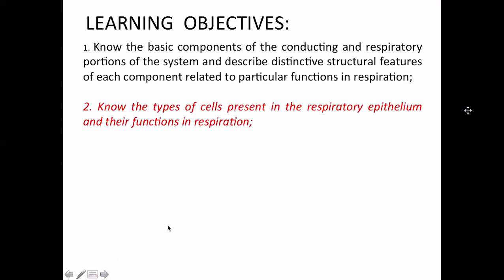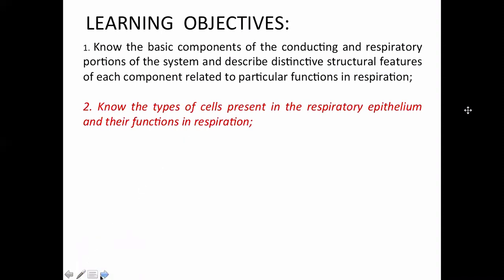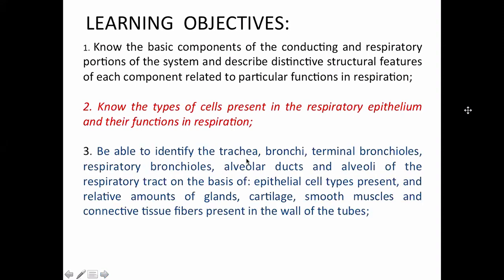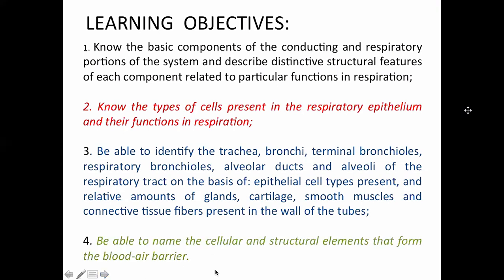Learning objective number two: know the types of cells present in the respiratory epithelium and their functions in respiration. Number three: be able to identify the trachea, bronchi, terminal bronchioles, respiratory bronchioles, alveolar ducts, and alveoli on the basis of epithelial cell types present and relative amounts of glands, cartilage, smooth muscles, and connective tissue fibers in the wall. Lastly, know the cellular and structural elements that form the blood-air barrier.